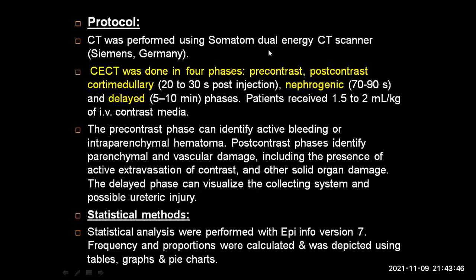The CT scanning was performed on a Somatom Siemens CT scanner and was done under four phases: a pre-contrast study, a post-contrast study taken in the arterial corticomedullary phase at 20 to 30 seconds post-injection, a nephrogenic phase at 70 to 90 seconds, and a delayed phase of 5 to 10 minutes. Patients received about 1.5 to 2 ml per kg of IV contrast media. The pre-contrast phase was done to identify active bleeding and intra-parenchymal hematoma. Post-contrast phase was done to identify parenchymal and vascular damage, including active contrast extravasation and other solid organ injuries. The delayed phase in particular can help visualize the collecting system and help rule out possible ureteric injury.